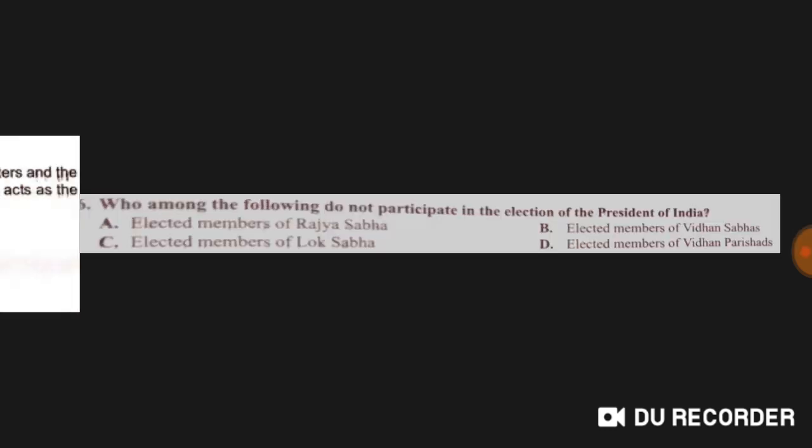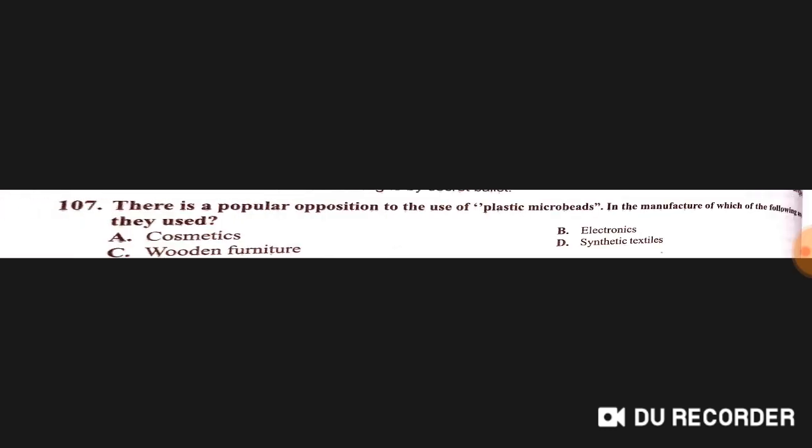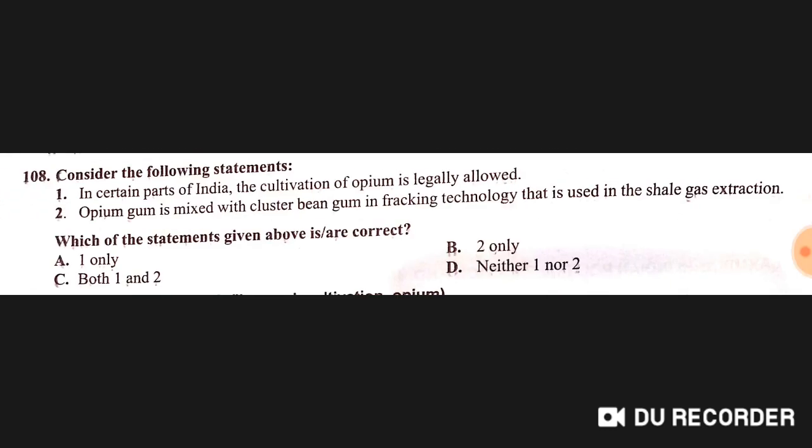There is popular opposition to the use of plastic microbeads in the manufacture of cosmetics. Regarding opium cultivation — in certain parts of India, cultivation of opium is legally allowed. Opium gum is mixed with cluster bean gum. Fracking technology is used for shale gas extraction. The correct answer includes statement one only.